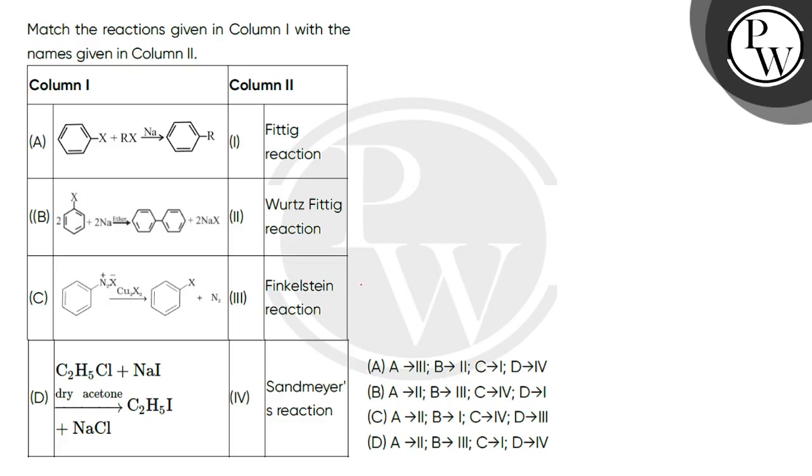Hello students, let's see this question. The question says, match the reactions given in column 1 with the names given in column 2. There are reactions in column 1, there are names in column 2, you have to find the correct match.